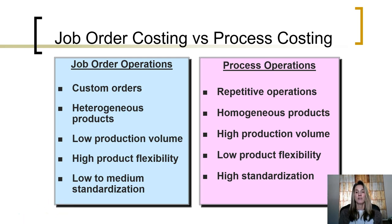But when we're dealing with inventory that is produced in an environment with repetitive operations, products that all look alike, a high volume of production, and most products are just like the other — there's not much flexibility because they're highly standardized — instead we have to use a process operation costing system.